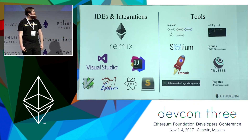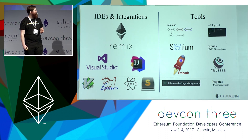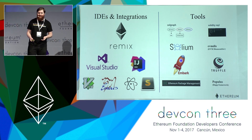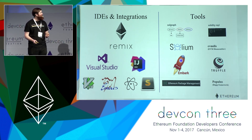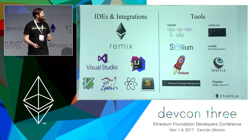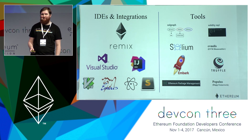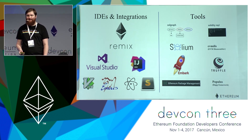Solidity has many integrations. Remix is one I mentioned. We also have Visual Studio, IntelliJ, Vim, Emacs, Sublime, and Atom. Whatever IDE you prefer, you can plug in something comfortable for you, and it has features like syntax highlighting. We also have tools like Solgraph, Solidity REPL, Solium, and a Disassembler. At the bottom there are Populous, Embark, and Truffle — really cool programs usually installed via NPM as Node.js programs. You can write tests for your Solidity contracts in things like Mocha, and automatically compile and redeploy contracts on the blockchain.